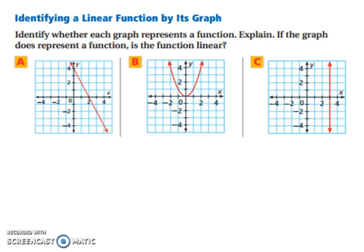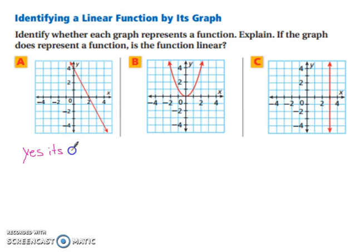Let's try identifying a linear function by its graph. Identify whether each graph represents a function and explain. If the graph does represent a function, is the function linear? Starting with graph a: it is a function because each domain value is paired with exactly one range value. And since the graph forms a straight line, yes, it is a linear function.